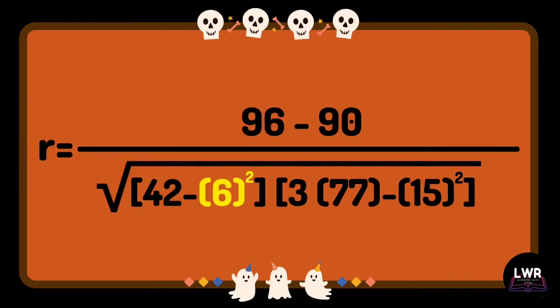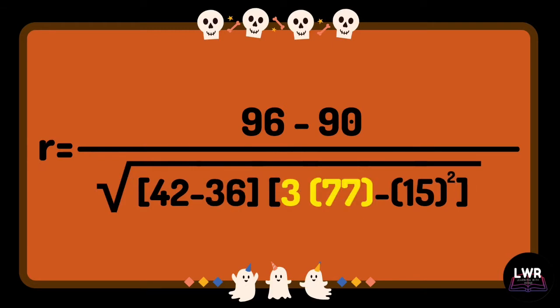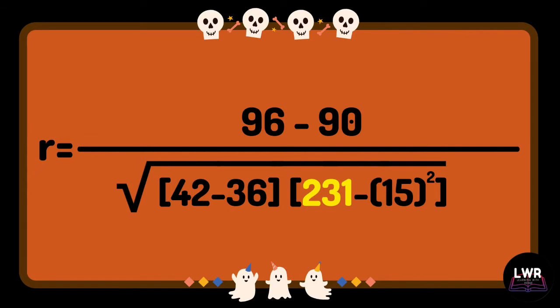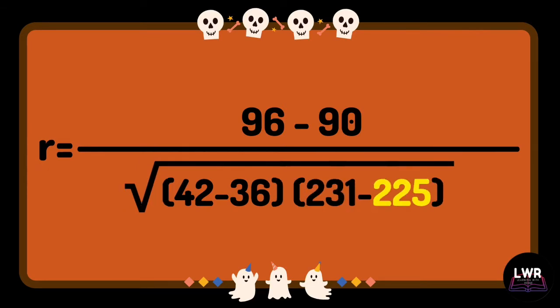6 raised to 2 is equal to 36. 3 times 77 is equal to 231. 15 raised to 2 is equal to 225.